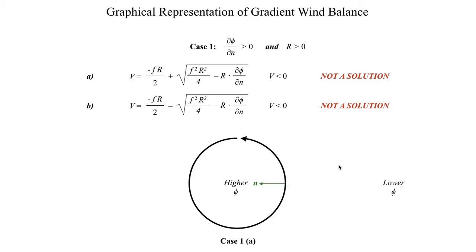Let's take a look at the forces that are actually involved here. We have three forces to worry about: pressure gradient force, Coriolis force, and centrifugal force. The pressure gradient force points from higher geopotential to lower geopotential, or higher pressure to lower pressure, which means my pressure gradient force points outward.